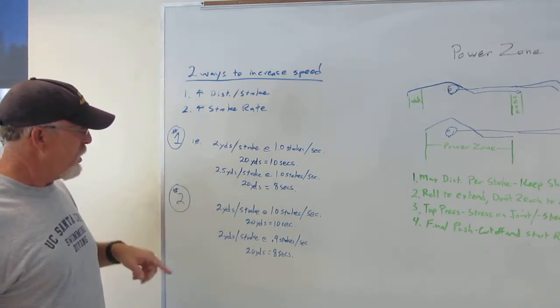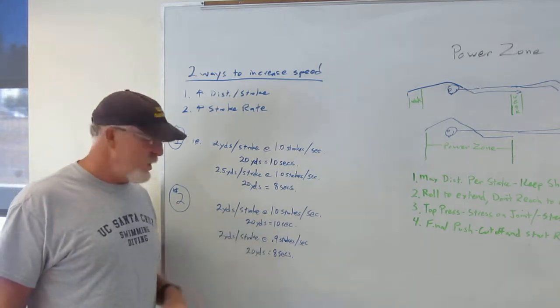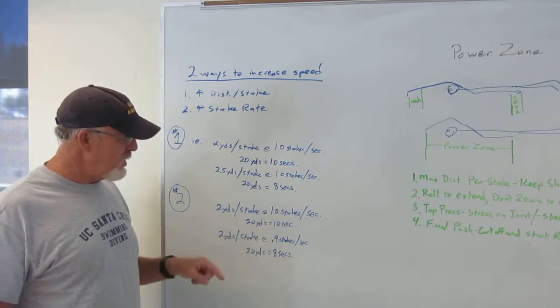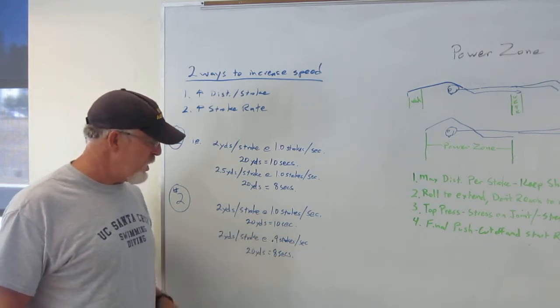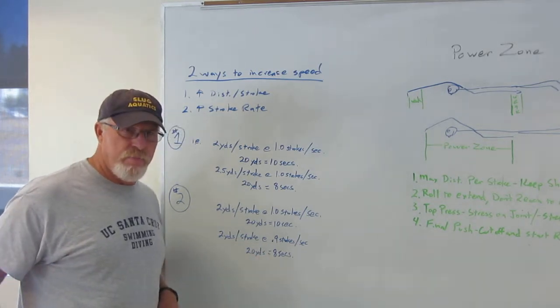The second way, if you can go two yards per stroke at one second, it'll take you 20 yards again to go 10 seconds. If you continue to keep the same distance per stroke, but if you can drop that down to 0.9 strokes per second, now you're going to cover those 20 yards in eight seconds.